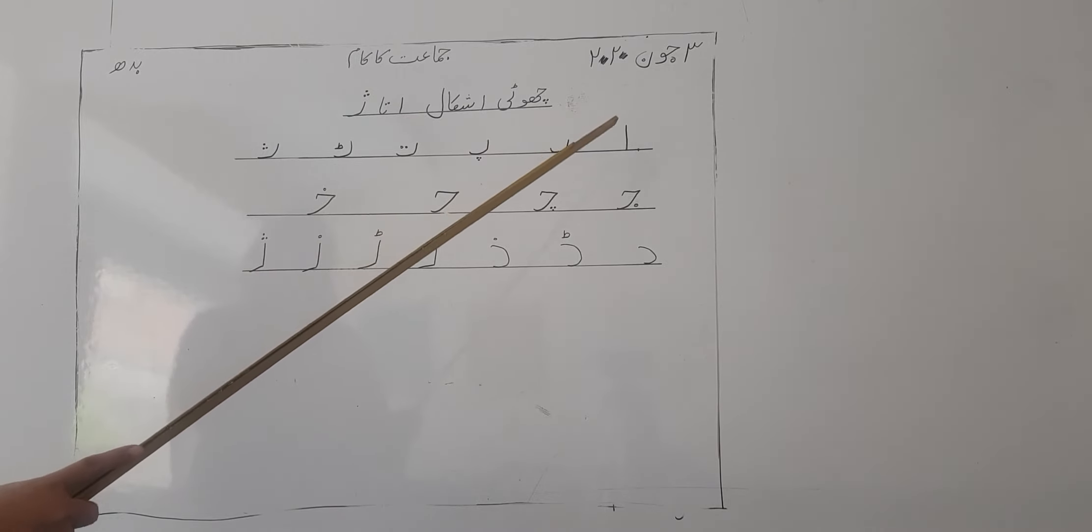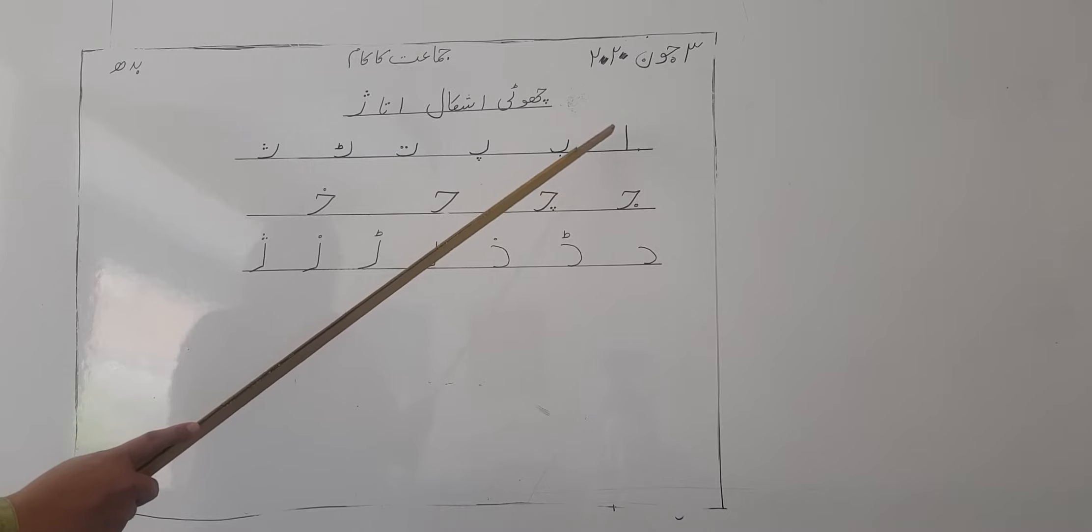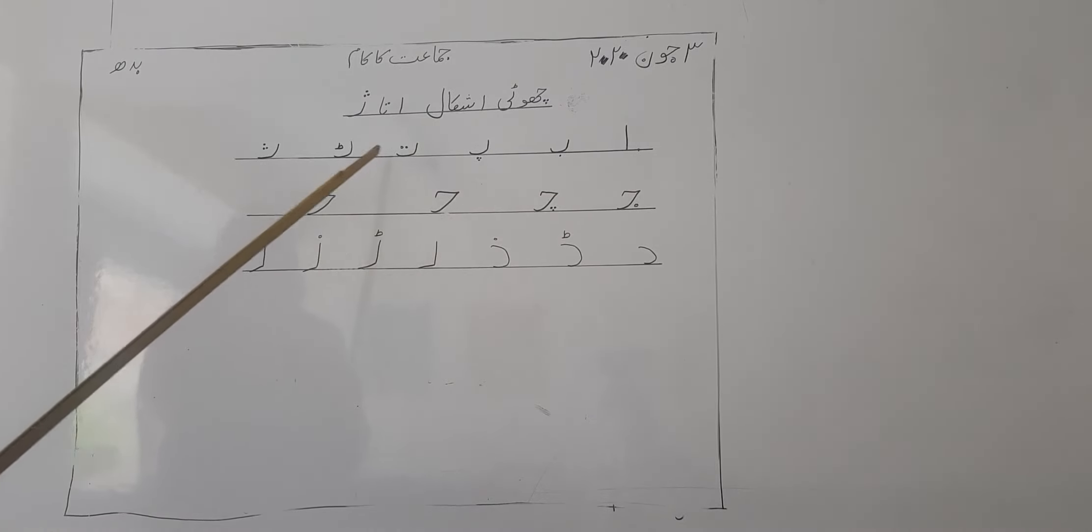Pahle aap ne copy ke first line pe notation likhna hai: alaf, be, pay, pay, te, te, se, jeem, che, hay, khay, daal, zaal, re, re, ze, se, jeem.